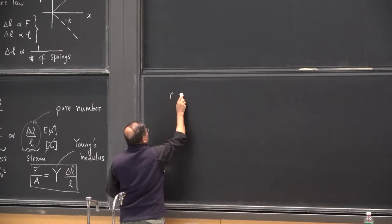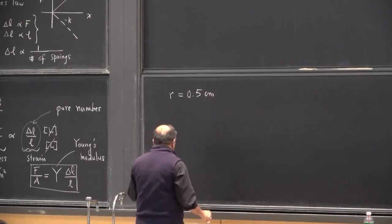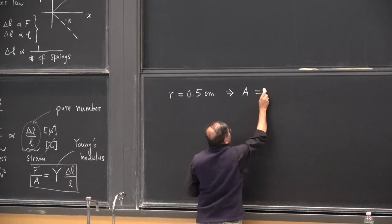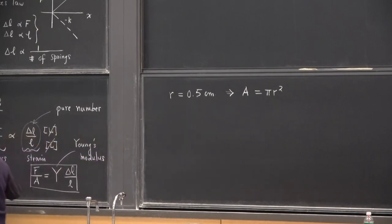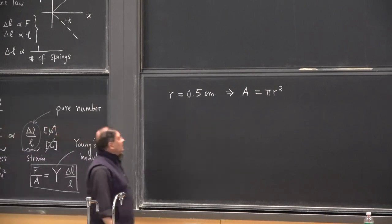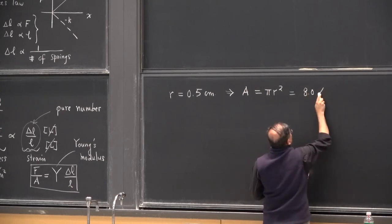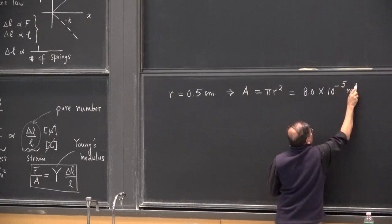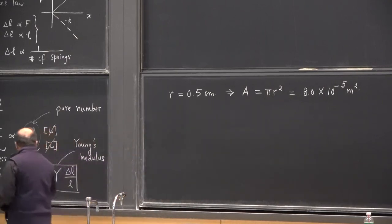Let's do a simple example. Suppose the radius of the wire is 0.5 centimeters. Convert this to meters — that implies that cross-sectional area A, which is pi times R squared, so the cross-sectional area here would be approximately 8 times 10 to the minus 5 meters squared. That's your A, and A is very important because it comes into our equation.